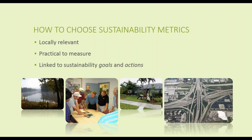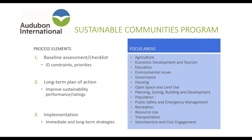Metrics or indicators need to be tied to local issues, local concerns, and local data. They need to be practical to measure — so pick indicators you know you can measure, either because you have existing data sources available or it would require only a feasible level of staff or partner input. You should also keep track of metrics you want to measure but don't have access to now — that list is great in case data later becomes available and to guide future funding or information requests. And it's critical that metrics are relevant to the goals and actions in your community that you're trying to achieve, with a direct link between the goals and the metrics.